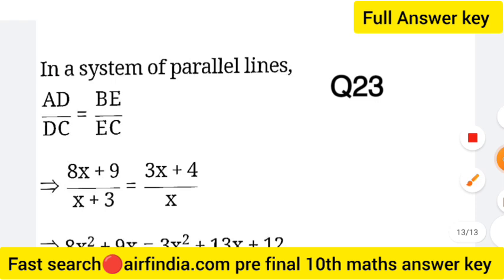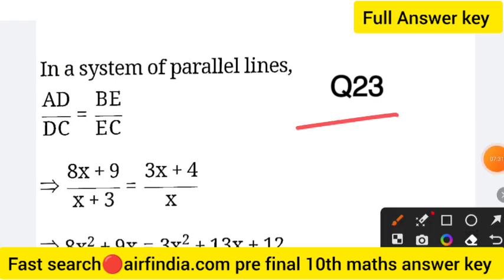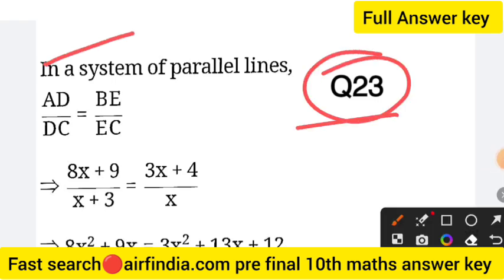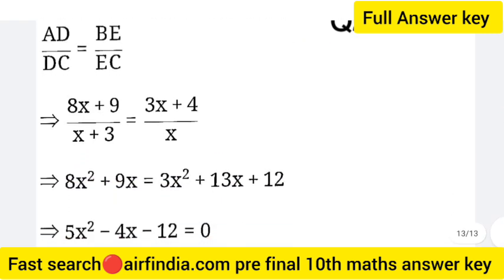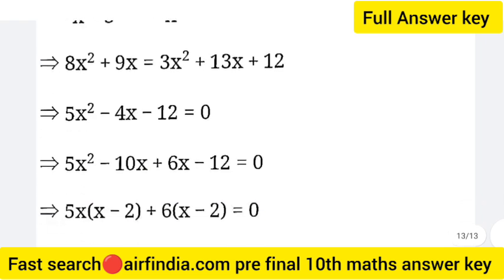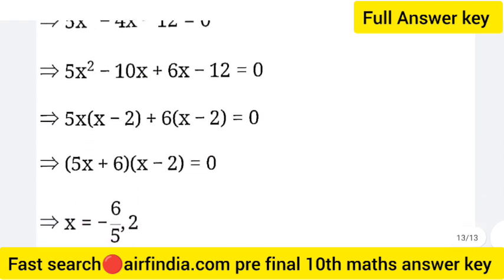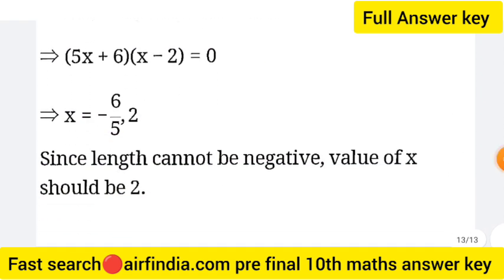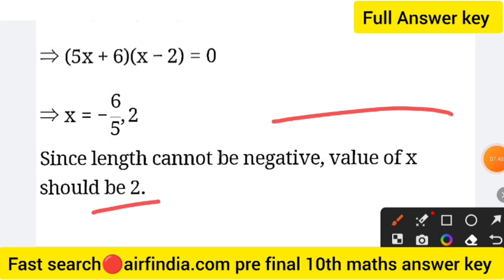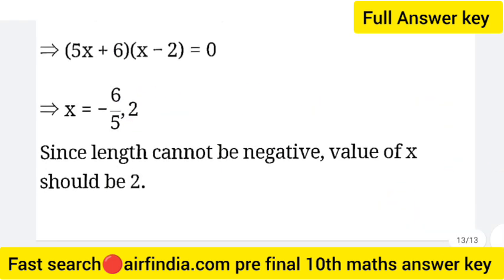Question 23: see the diagram of a system of parallel lines. AD upon DC equals BE upon AC. The equation is 8x plus 9 upon x plus 3 equals 3x plus 4 upon x. Solving gives x equals minus 6 or x equals 2. Since length cannot be negative, the value of x should be 2. Length is always positive.